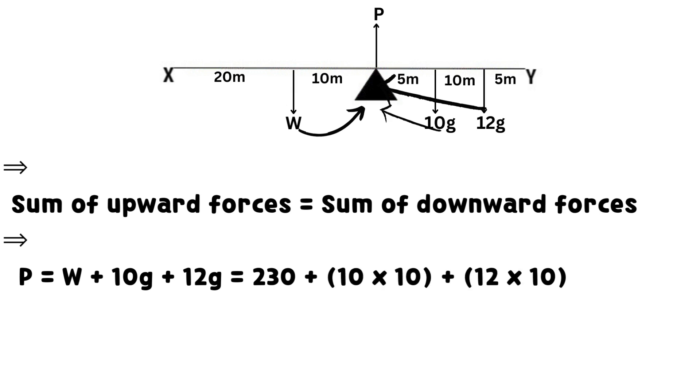This implies that sum of upward forces equals sum of downward forces. It signifies that magnitude of the reaction P equals the sum of W, 10 times 10 and 12 times 10, which equals 450 newtons.